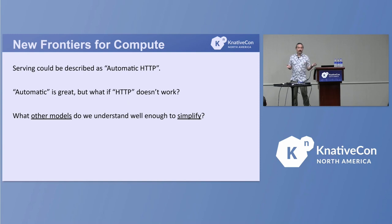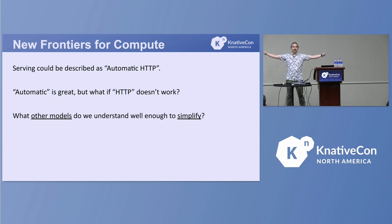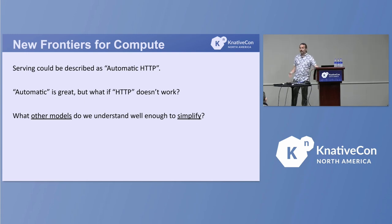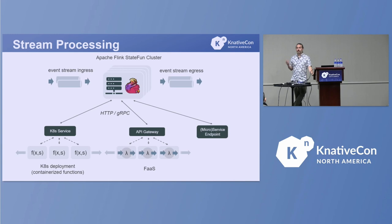A bunch of these future ideas are things we don't do today — they're ideas for what could come next. Serving is basically automatic HTTP: you've got a web server, and it handles as many instances as you need. But there are other models where we could extend that further.